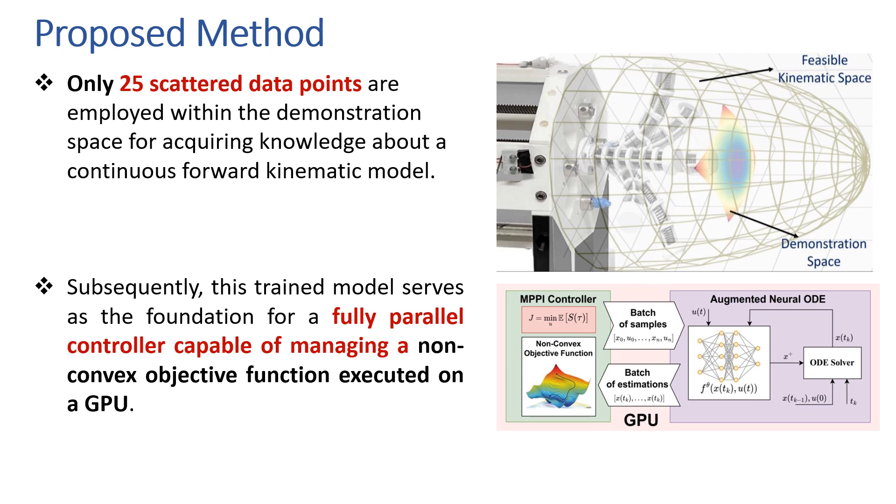This work introduces a novel approach for modeling continuous forward kinematic models of soft continuum robots by employing Augmented Neural ODE, a cutting-edge family of deep neural network models. To the best of our knowledge, this is the first application of Augmented Neural ODE in modeling soft continuum robots.